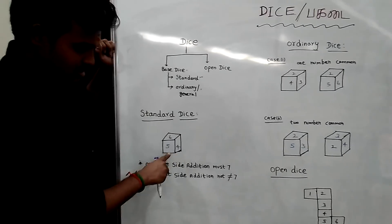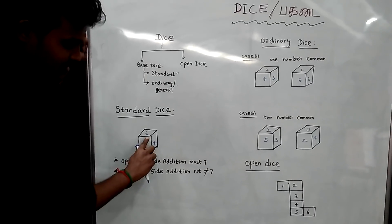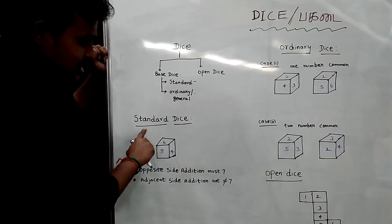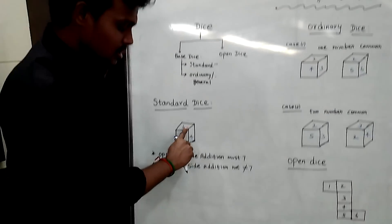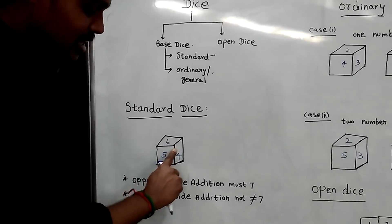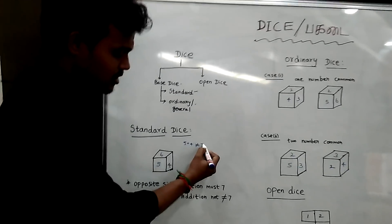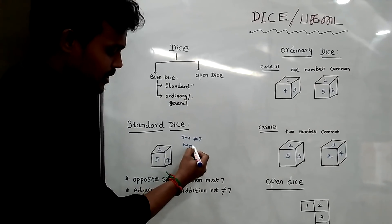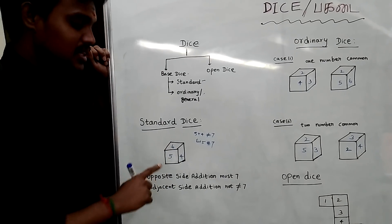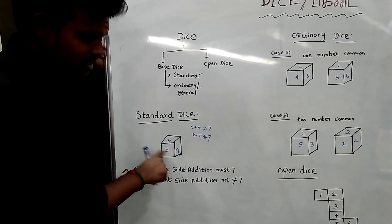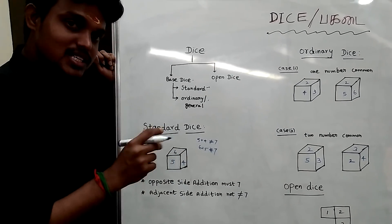Standard DICE is the best DICE. In standard DICE, suppose 5 dot and 4 dot — this is the standard condition: adjacent groups. The condition is that the adjacent faces — 7 is the rule. 5 plus 4 added gives 7. So 7 will be added. It's 6 plus 5, add 7. But this is the opposite side — the opposite side addition is 7. If 5 is on one side, the opposite side gives 7.